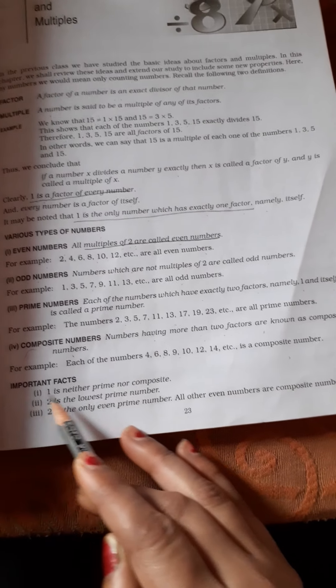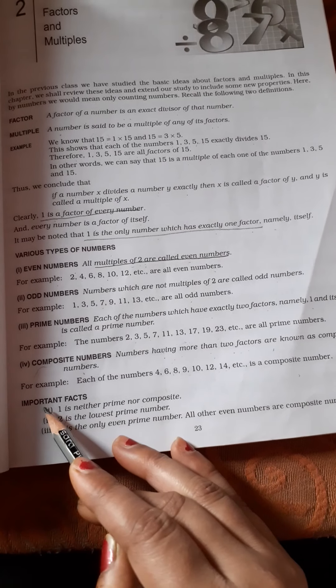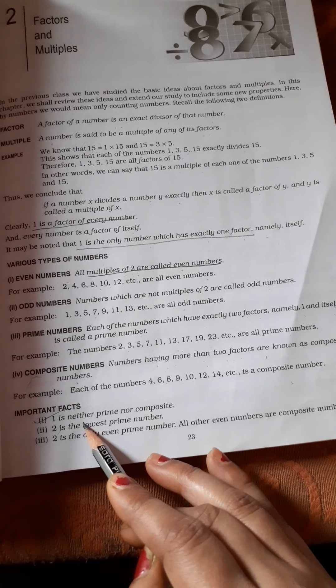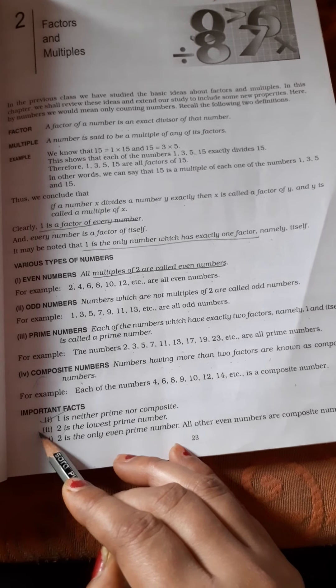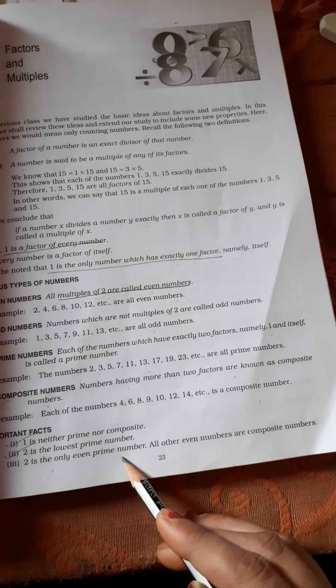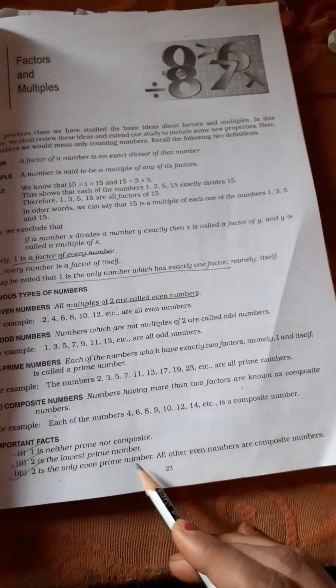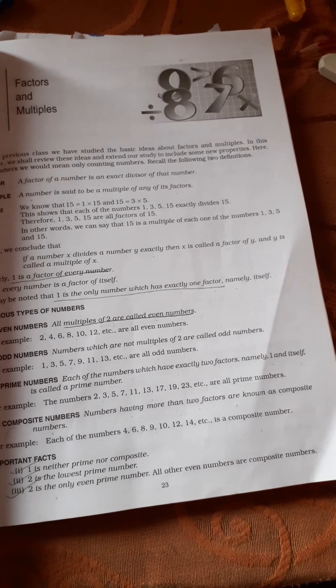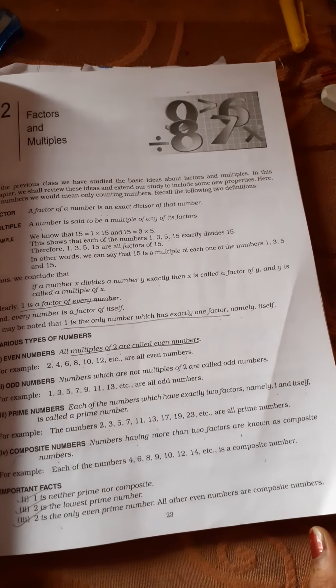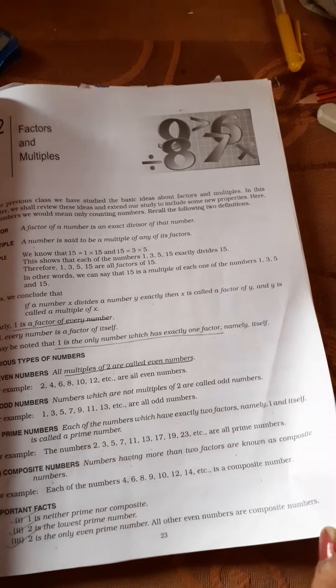Important facts: 1 is neither prime nor composite because 1 has only one factor. 2 is the lowest prime number. 2 is the only even prime number. All other even numbers are composite numbers. 2 is the only prime number which is even.